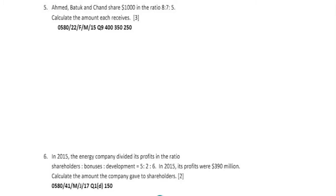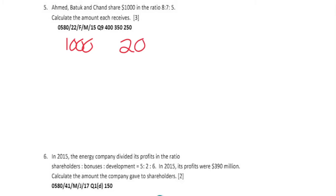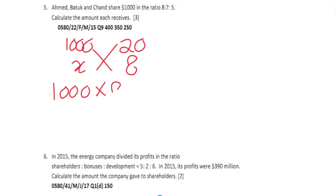Question 5: Emmeth, Batuk and Chand share $1000 in the ratio 8:7:5. This means Emmeth receives $8 parts, Batuk $7 parts, and Chand $5 parts. $1000 represents the total share of 8 plus 7 plus 5, which is 20 parts. To calculate Emmeth's amount: cross multiply 1000 times 8 equals x times 20, then divide by 20.